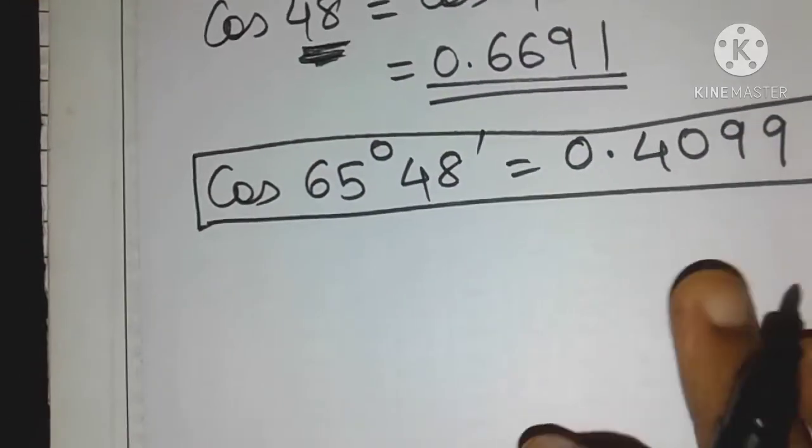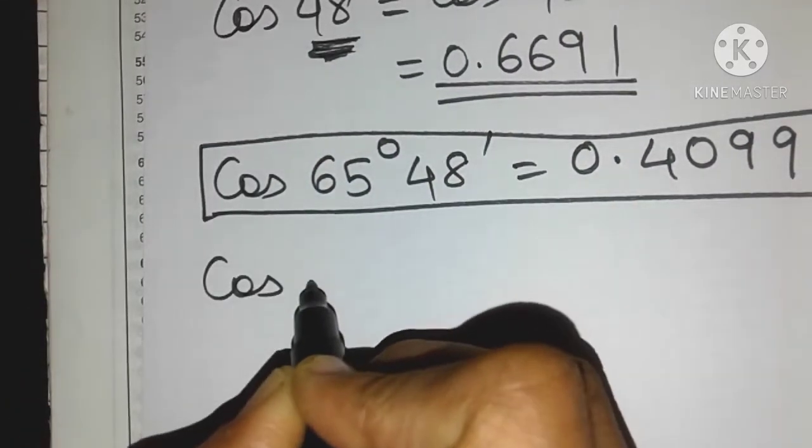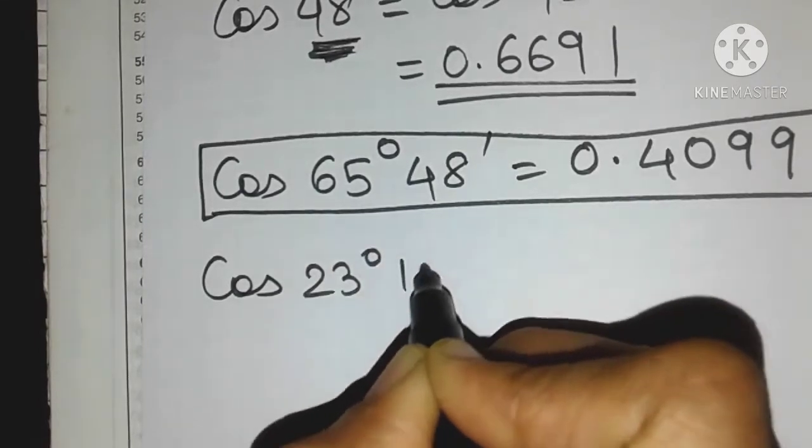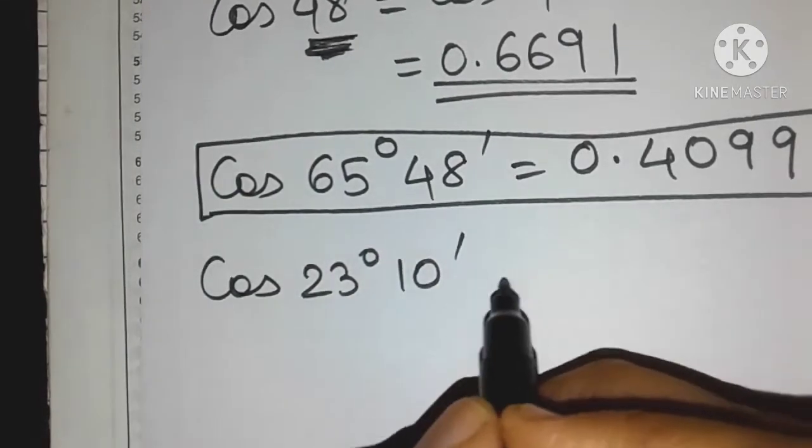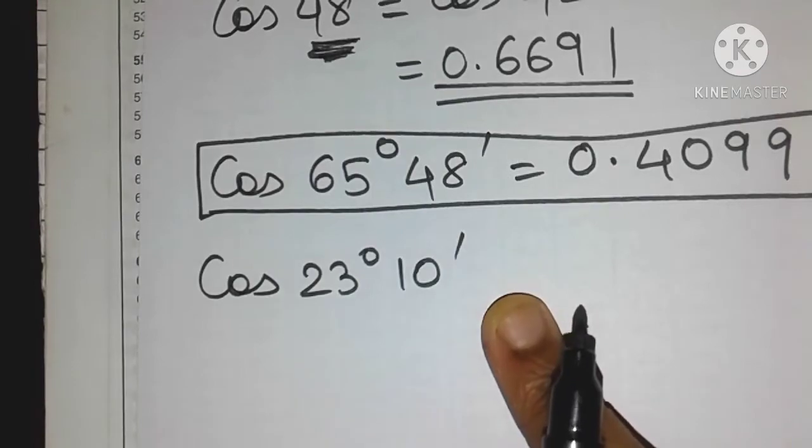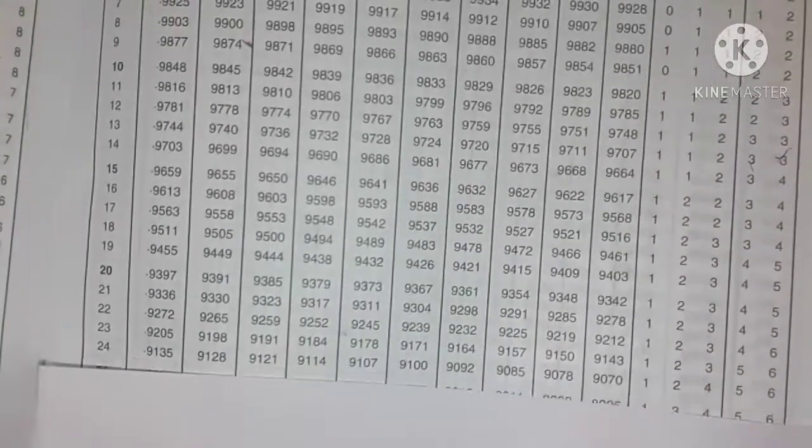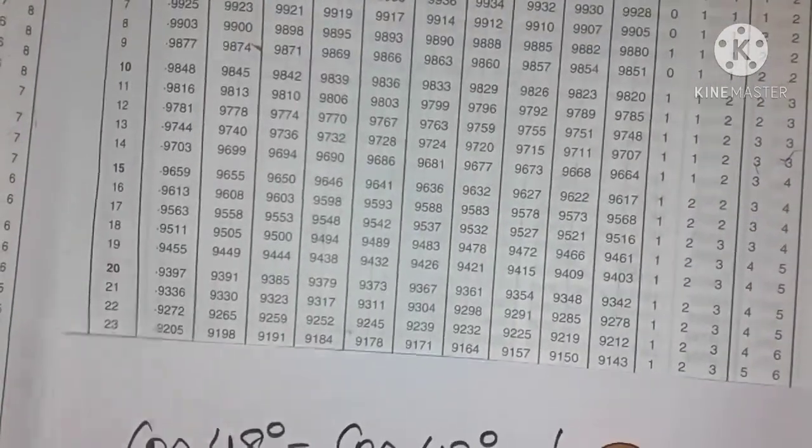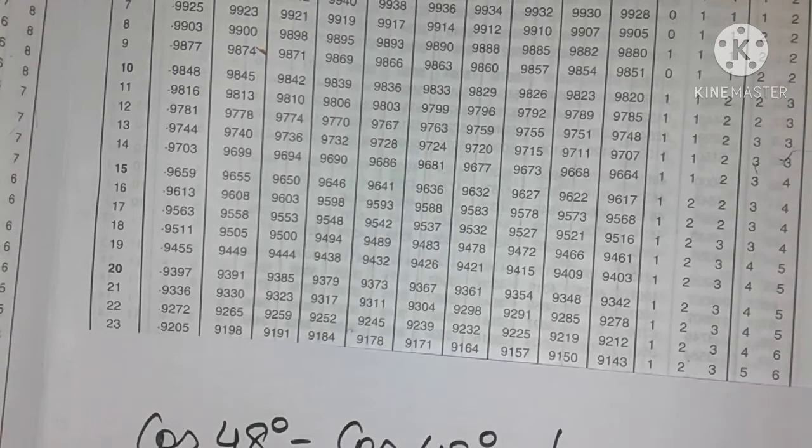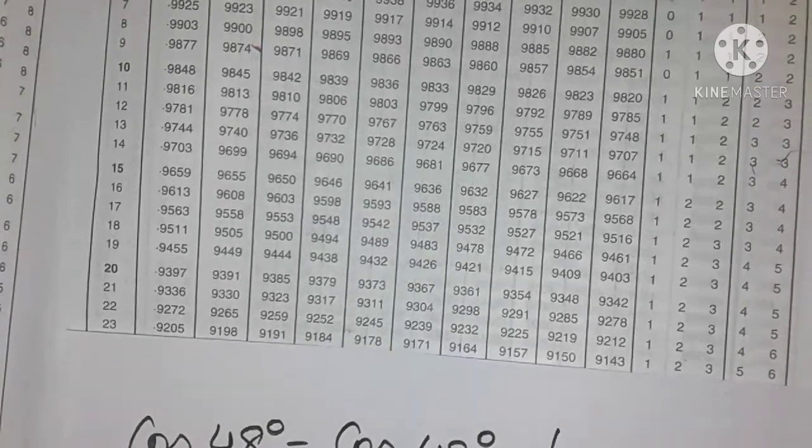Now friends there is a third type of angle that we have to discuss which is cos of 23 degrees 10 minutes. Now let's see how to find out the cosine of this angle. So 23 degrees let's go back. Here is our 23 degrees friends over here. This is our 23 degrees. Now we have to look for the 10th minute.